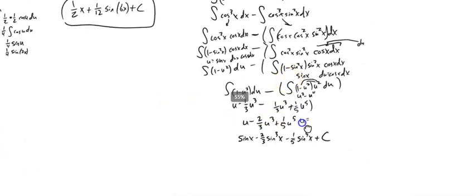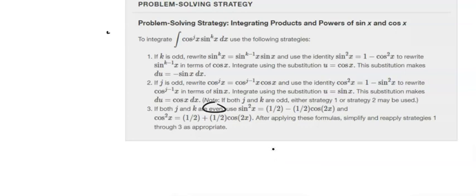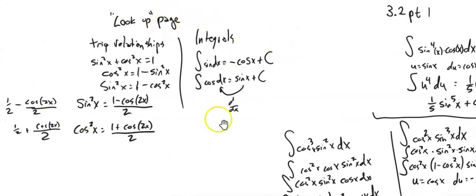That is the basic idea. When powers are even, use the double angle formulas. When one of them is odd, break it up to get a singleton, then use u-substitution. I strongly encourage you to start a lookup page — we'll add more trig integrals as we go. Next time we'll talk about doing this with secant and tangent, and then we'll work on using trig for substitutions. Give these problems a good go and send me any questions.